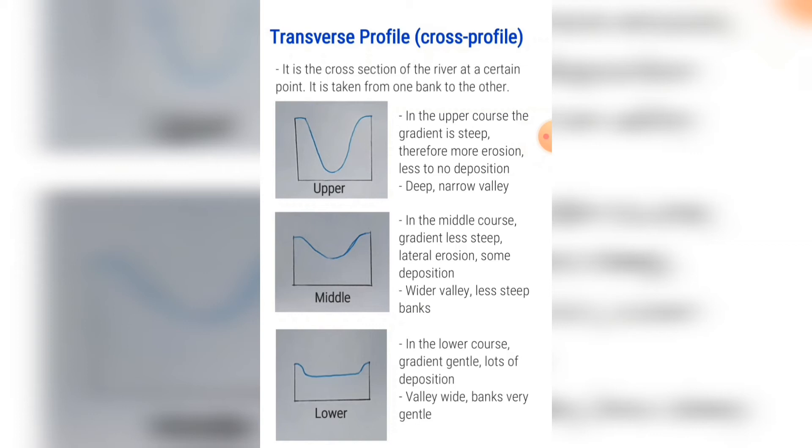In the lower course the gradient is gentle and there is a lot of deposition but very little erosion. The valleys are wide and the banks are very gentle.